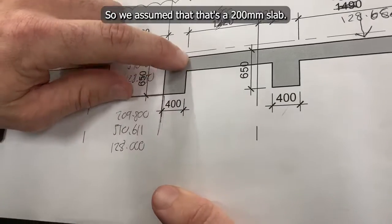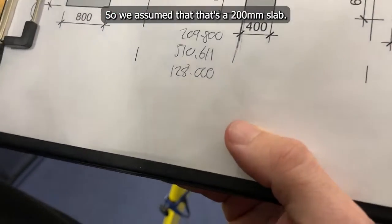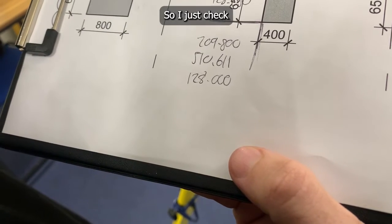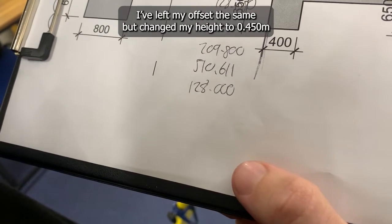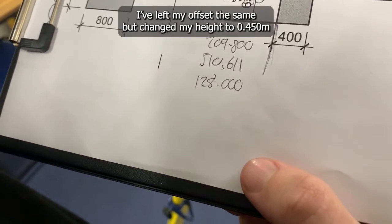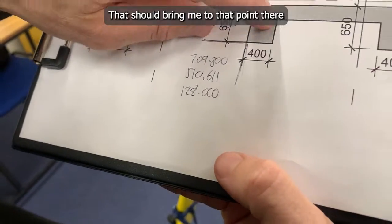We assume that's a 200mm slab. I just left my offset the same, but I changed my height to 0.45. That should bring me to that point now.